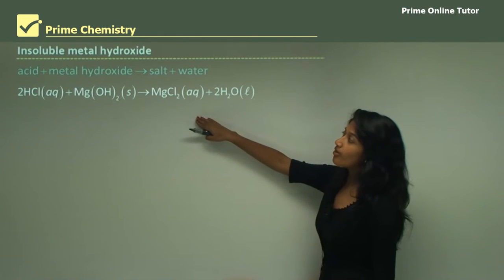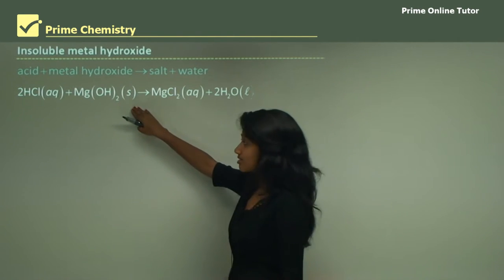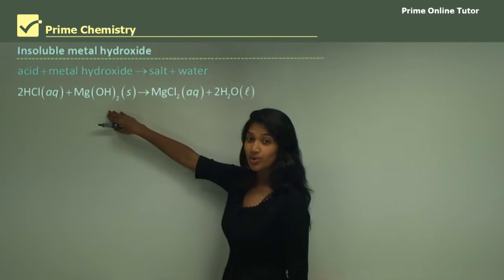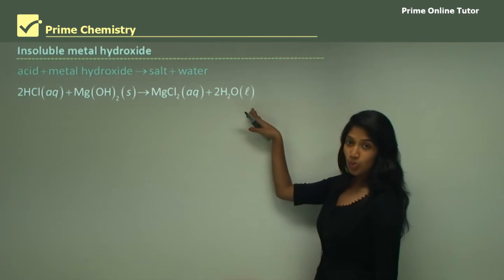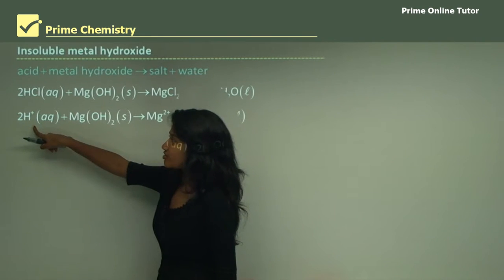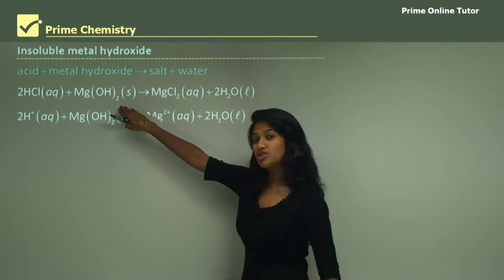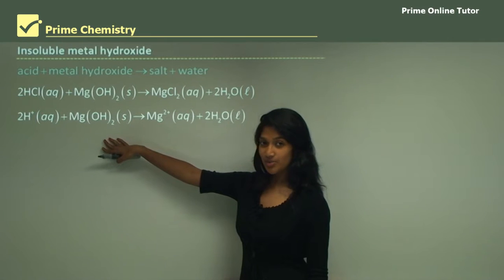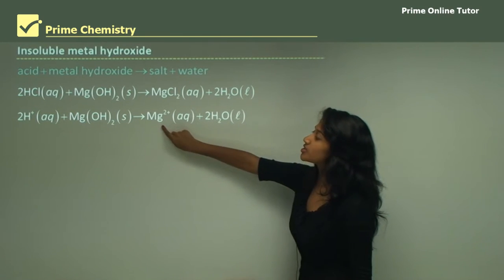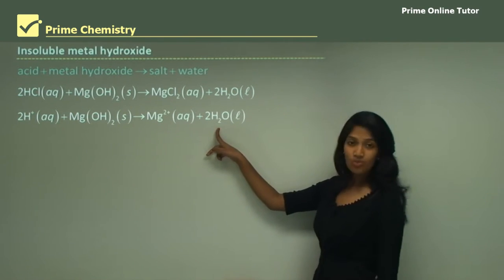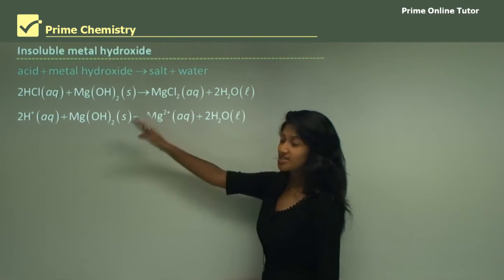There are also insoluble metal hydroxides — metal hydroxides that are solids. For example, hydrochloric acid reacting with magnesium hydroxide forms magnesium chloride and water. Because hydrochloric acid is in solution it produces hydrogen ions, but magnesium hydroxide is not in solution so it doesn't produce ions. However, magnesium chloride is in solution, so it ionizes to form magnesium ions. The chloride ions cancel out as they appear equally on both sides.